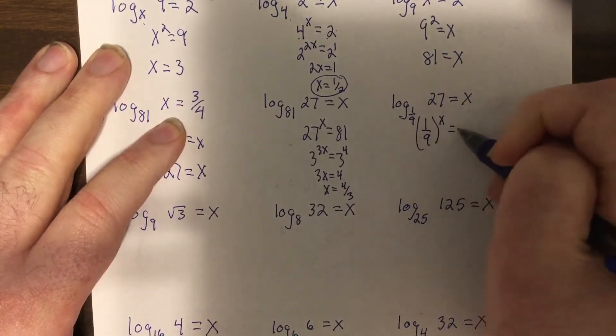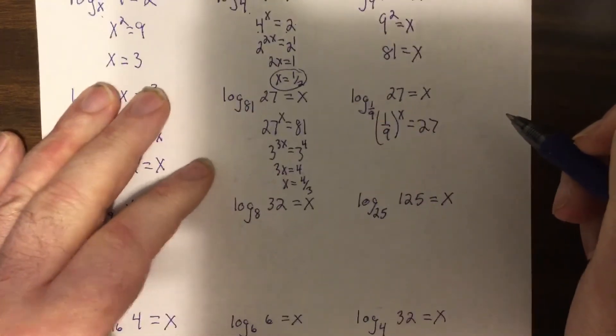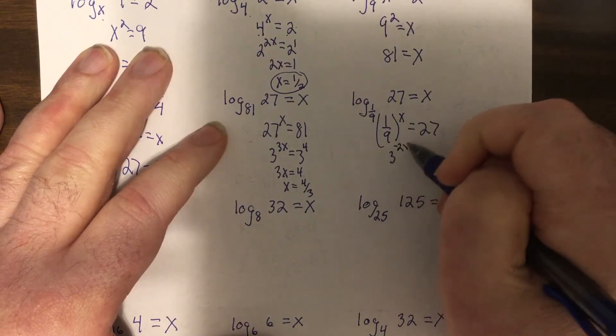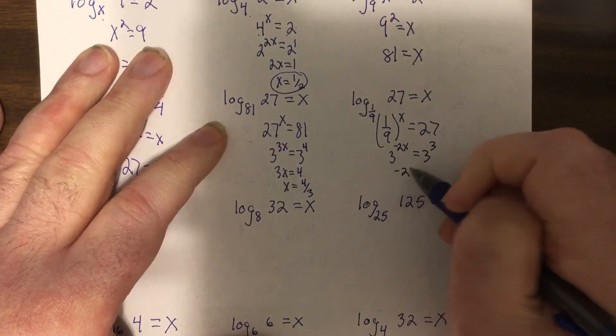So it'd be three to the negative two x equals three cubed, so negative two x equals three, so x equals negative three halves.